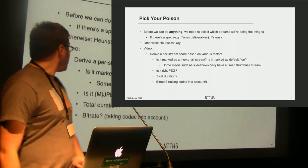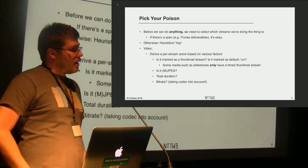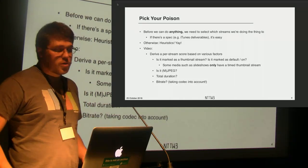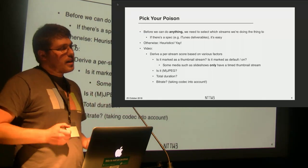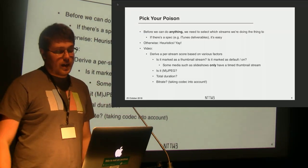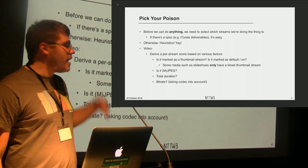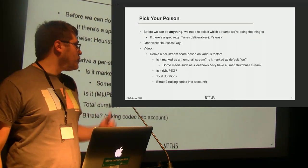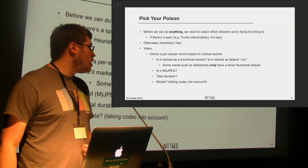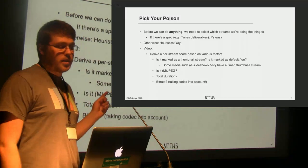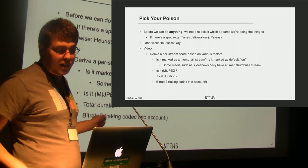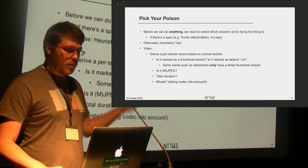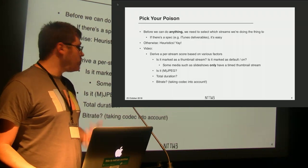For video stream selection, we make a score based on how likely a stream is to be a legitimate video stream. Simply being JPEG tanks that score immediately, because it's almost always a thumbnail or timed thumbnails and usually not tagged properly — except when you do want those thumbnails to be the video stream, like for slideshows. Then you rank based on total duration, bit rate, and pray you're right.